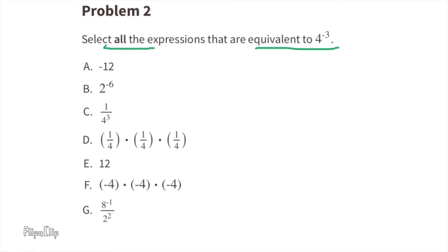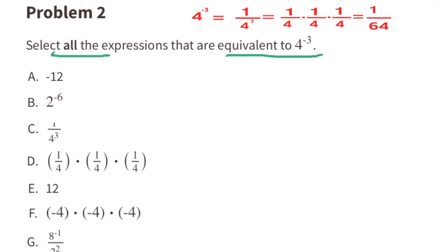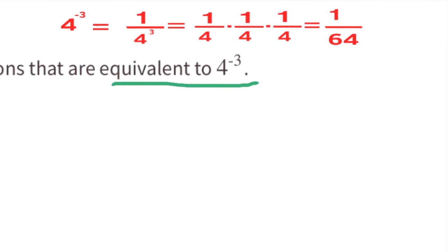Problem number two: Select all the expressions that are equivalent to four to the power of negative three. Four to the power of negative three can be written as one over four to the power of positive three, and that can be expressed as one fourth times one fourth times one fourth, which equals one over 64.